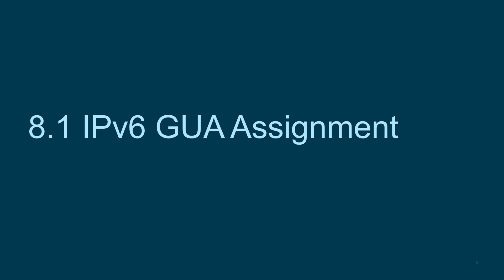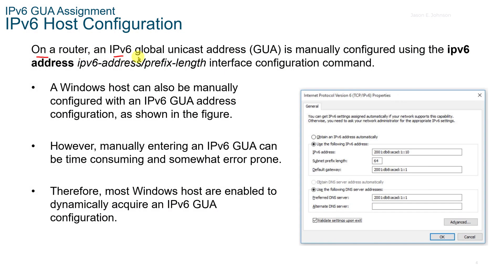8.1 IPv6 GUA Assignment. On a router, an IPv6 Global Unicast Address, or GUA, is manually configured using the IPv6 Address command, and a Windows host can also be manually configured with the IPv6 GUA address as shown in the figure to the right. However, manually configuring that can be time-consuming and is prone to human error.